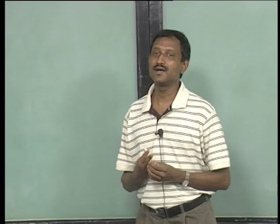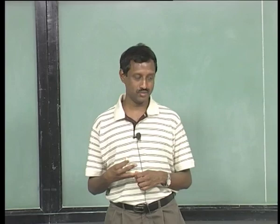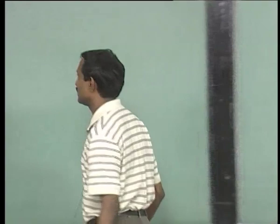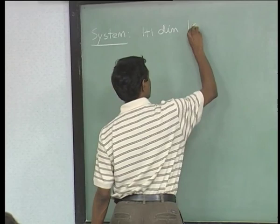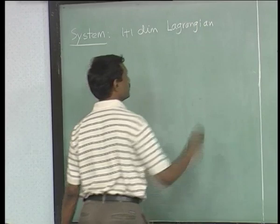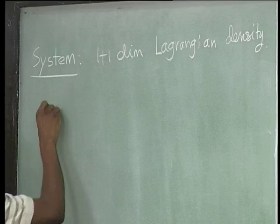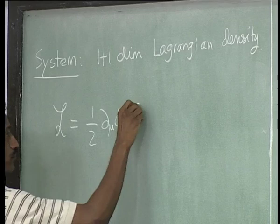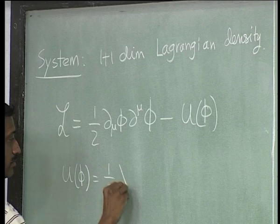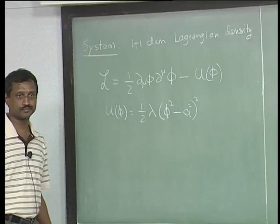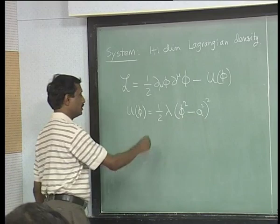We will discuss certain ideas which play an important role in theoretical physics. The system is the 1+1 dimensional one given by a 1+1 dimensional Lagrangian density with just one real scalar field, where U(φ) = half λ(φ² − a²)². So it has a quartic potential shifted by this term — it is a classic double-well potential.